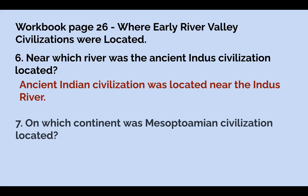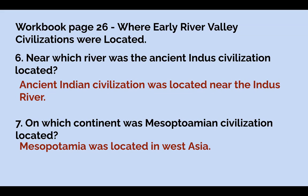Number seven — continent review: on which continent was Mesopotamian civilization located? Mesopotamia was located in Western Asia. It's technically part of Asia.